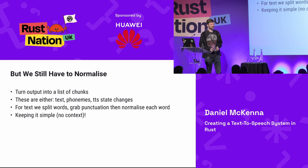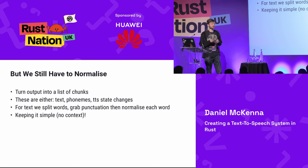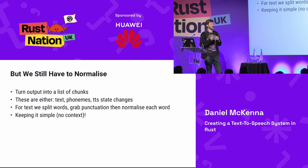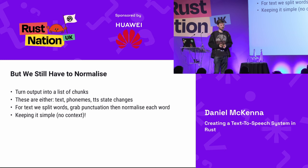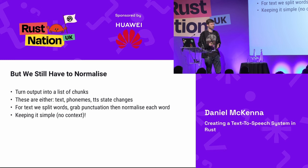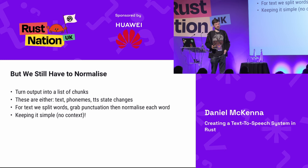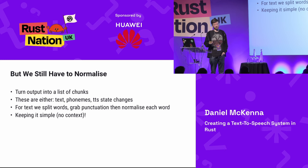Even with SSML, we still have to normalise. My approach: I turn the output into a list of chunks — either text, phonemes, or state changes for the TTS like pitch changes, breaks, and pauses. For text, we split into words, grab punctuation, and normalise each word. I don't keep major context; there's a bit around numbers to get them roughly right. I don't handle homographs like bass/bass — rule-based systems for that don't work well. You should just train a model. We've got our dictionary, but there will be unseen words, so we'd use G2P (grapheme-to-phoneme) systems.